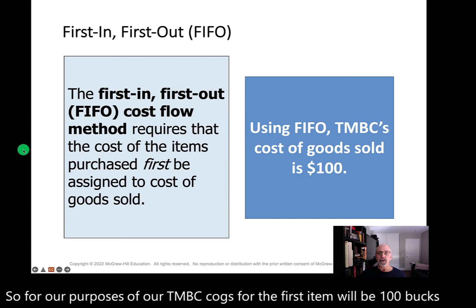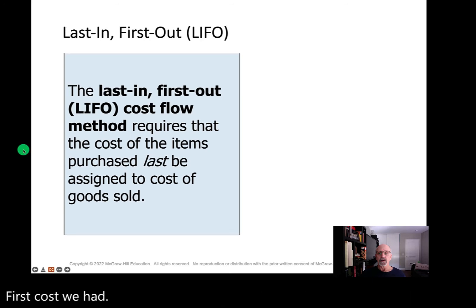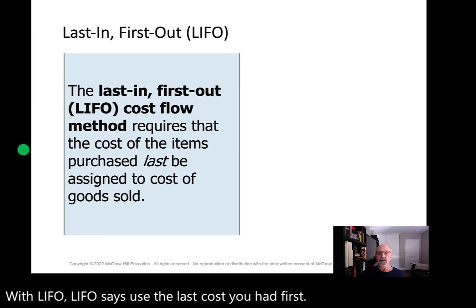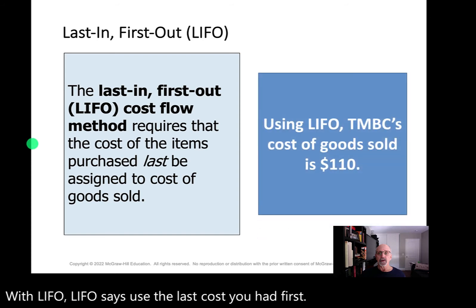With LIFO, the rule is to use the last cost you had first. So since the last cost we had for TMBC was $110, the first item that we sell will have COGS of $110.